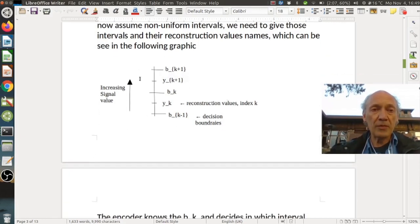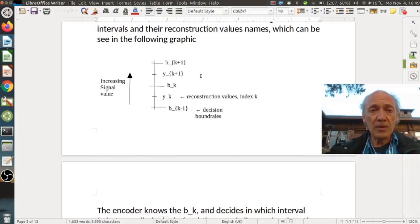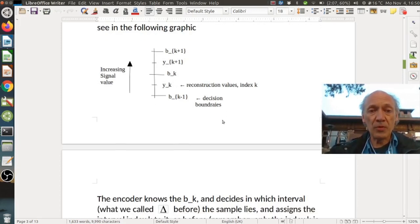So here on the vertical axis, we have the signal value. So basically here we see the bins. And we call the decision boundaries, where we have the boundaries between the intervals, b_k. So here we have b_k, here the previous one, b_{k-1}, and here b_k, k+1. And in between we have the reconstruction values, which is basically what the decoder needs to reconstruct a signal value, which we call y_k or y_{k+1} for the neighboring intervals.